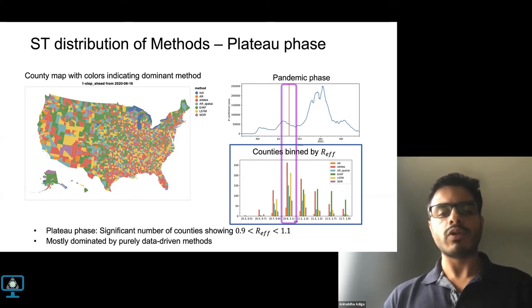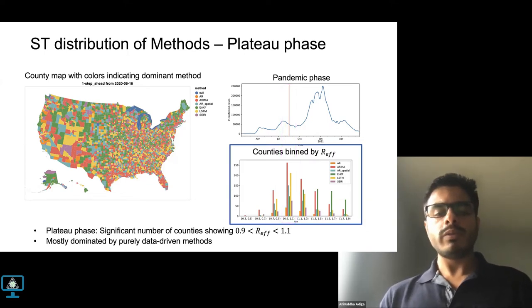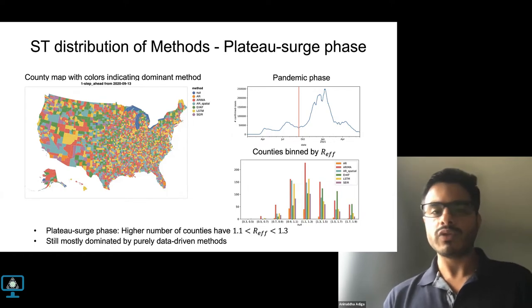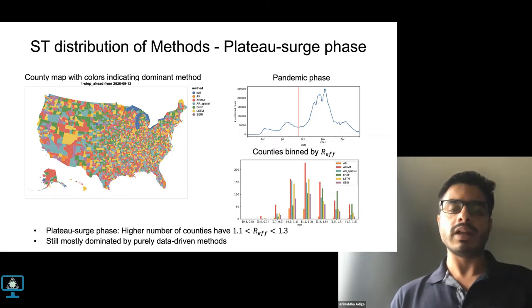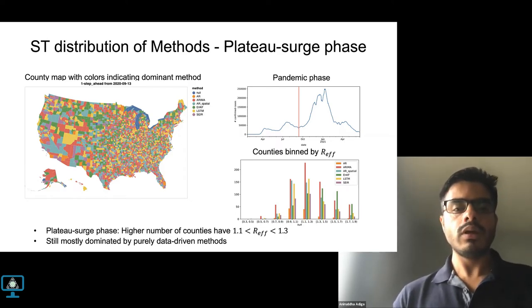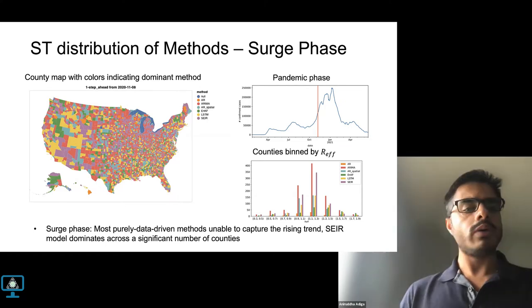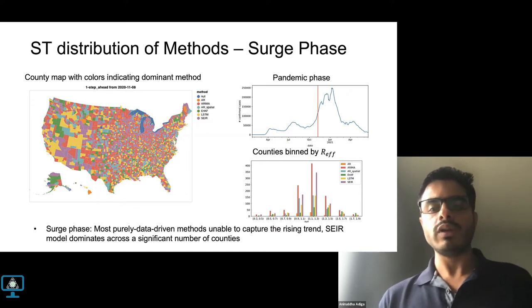We also bin the counties based on their R-effective values to understand the general growth trends across all the counties. We combine the R-effective values and the dominant method associated with the county to depict them as a bar plot. We have binned the R-effective values into equal width bins like 0.7 to 0.9, which indicates decline in cases for those counties. Then we have 0.9 to 1.1, which indicates plateauing of cases for those counties. And then we have 1.1 to 1.3 and higher bins, which indicate growth in cases. This is particularly the plateau phase that we are seeing here. The bar plot indicates that there are considerable number of counties experiencing plateau or slow growth, and they are in the range 0.9 to 1.9. Looking at the distribution of methods, we observe that it is mostly dominated by some of the data-driven methods like AR methods and LSTMs. We move ahead by a month and the reported number of cases have plateaued, but the R-effective number plot shows a shift with a higher proportion of these counties falling in the 1.1 to 1.3 bin, indicating a growth in cases. At this stage, we still observe that methods like ARIMA, AR spatial, and LSTM methods are still dominating.